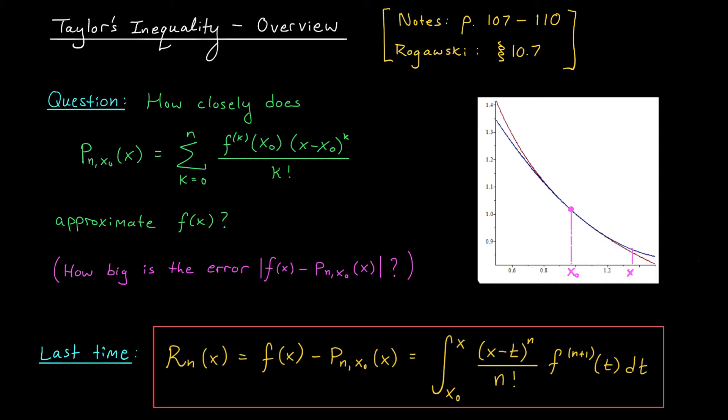We're going to see a result called Taylor's inequality that tells us how big this error term really is. To start things off, allow me to remind you of the major result we proved at the end of the last lesson, Taylor's remainder theorem. It states that the difference between f of x and pn x naught, our remainder term, which we denoted by rn of x, is given by this crazy integral expression involving powers of x,